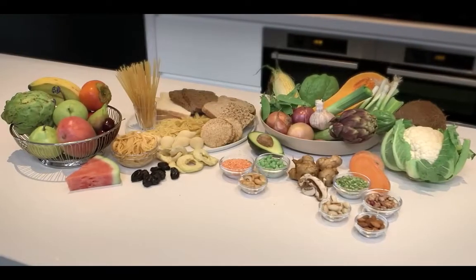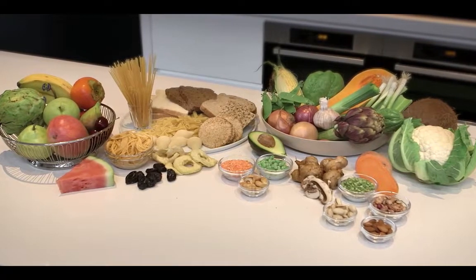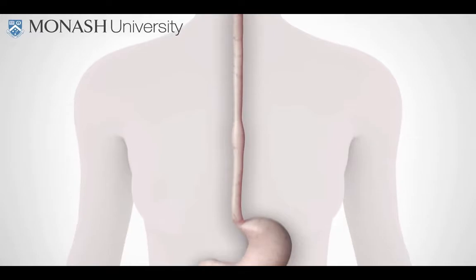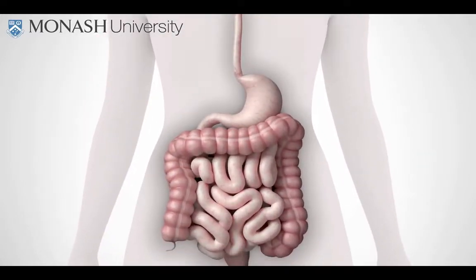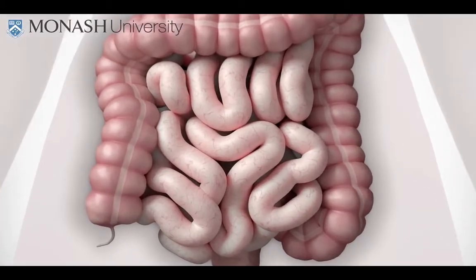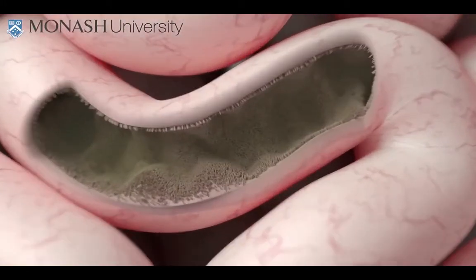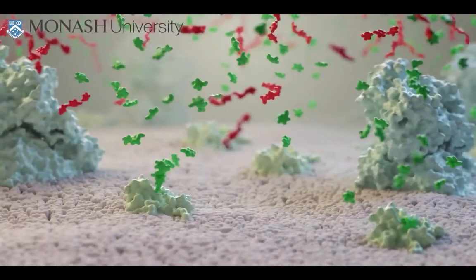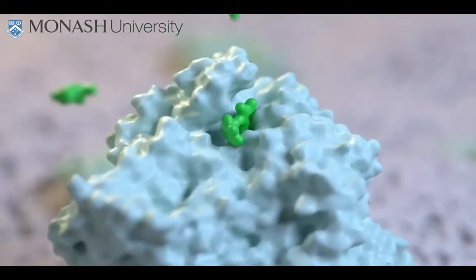Here we can see some examples of high FODMAP foods. To understand how some foods contribute to IBS symptoms, we need to look inside the intestines, where food is broken down and absorbed. Zooming in to the molecular surface of the intestinal cells, we see they are covered in molecular machines that accelerate the breakdown of carbohydrates.